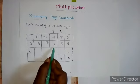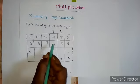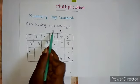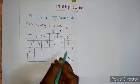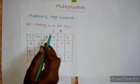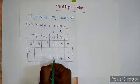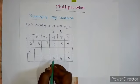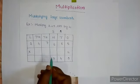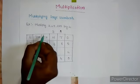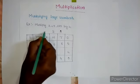4 sixes are how much? 24, right? Plus 3 carry. 4 sixes are 24, plus 3 carry equals 27. I am going to write 7 and we carry 2 in the place of 1000.